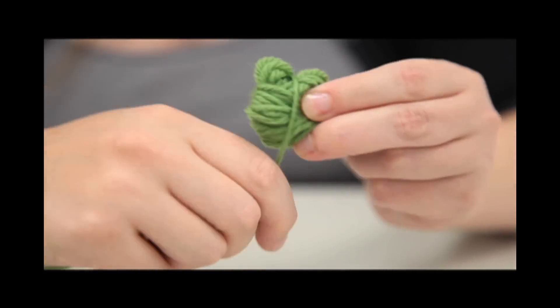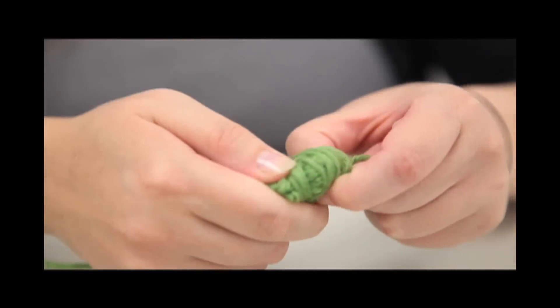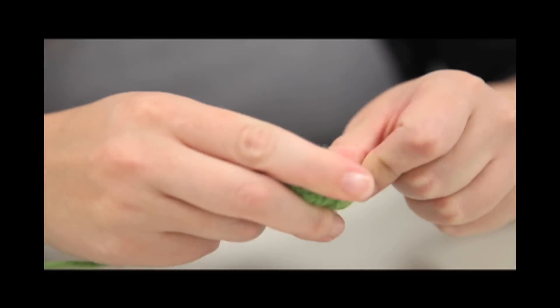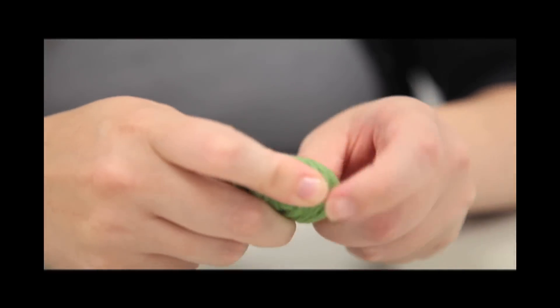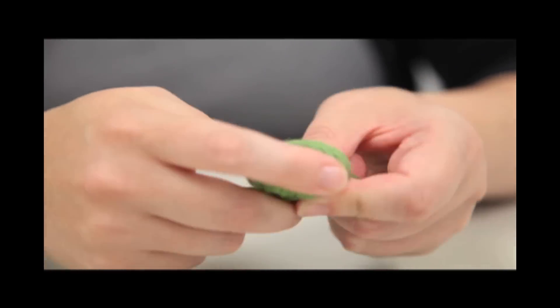Now that this is a little bit more tidy, you're going to take your thumb and place it right in the middle, right where the strand is coming out. This is going to create a space in the middle of your ball so that it's easier to pull the yarn out in the end.